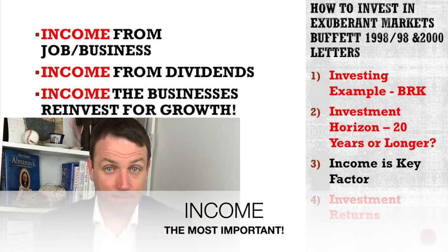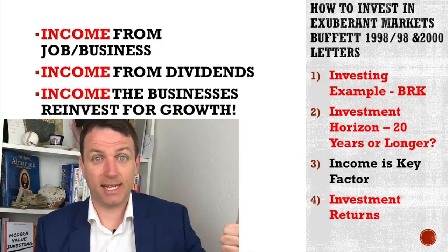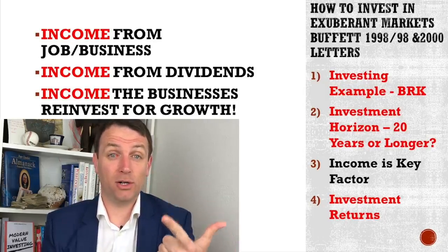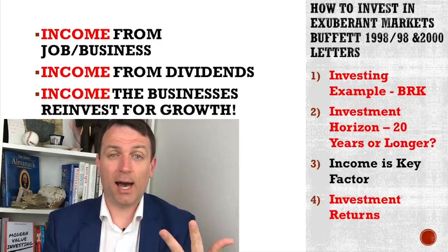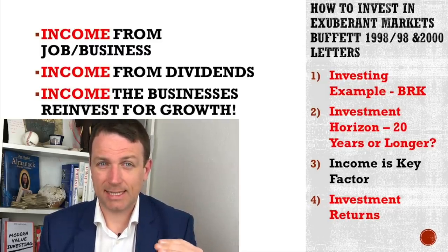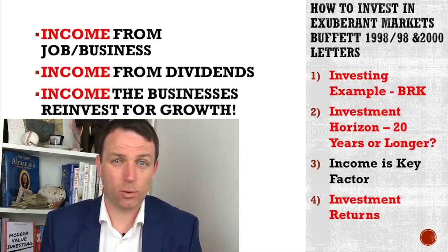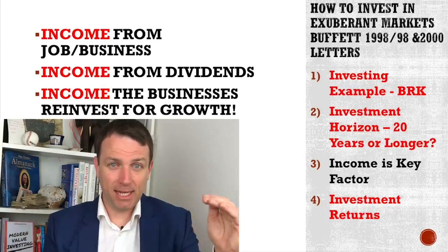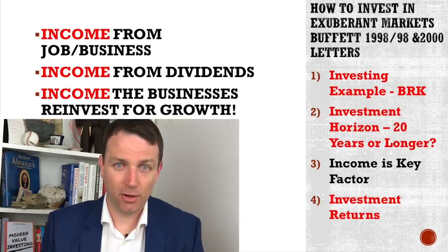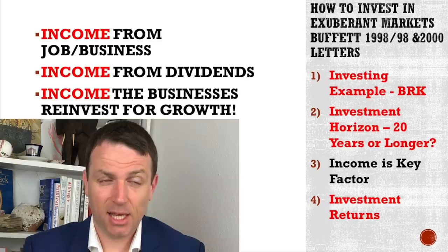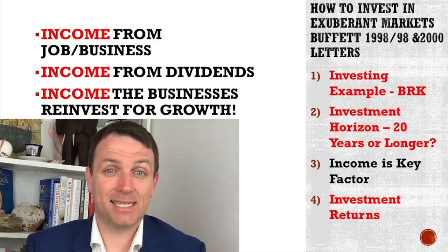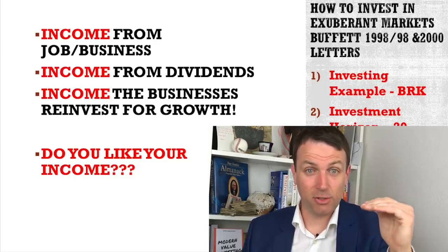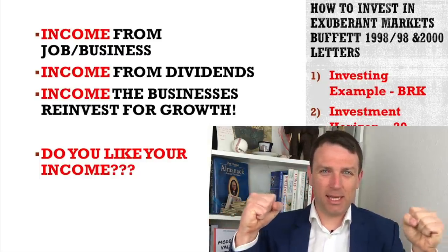The key is income — income from your job, income from your business — and how you are going to invest that over the next 20-30 years. Then you have income from dividends: how are you going to reinvest that? And then you have income from businesses not distributed to you: how are those businesses reinvesting it? Warren always says his businesses invest at return-on-equity rates of 20%, and that is his focus. No matter what happens — income, opportunities, slowly building a portfolio and accumulating wealth — that's all Warren Buffett did, with a little insurance float on the side.